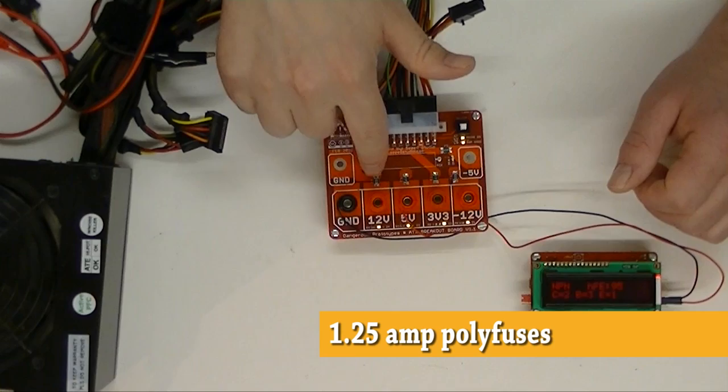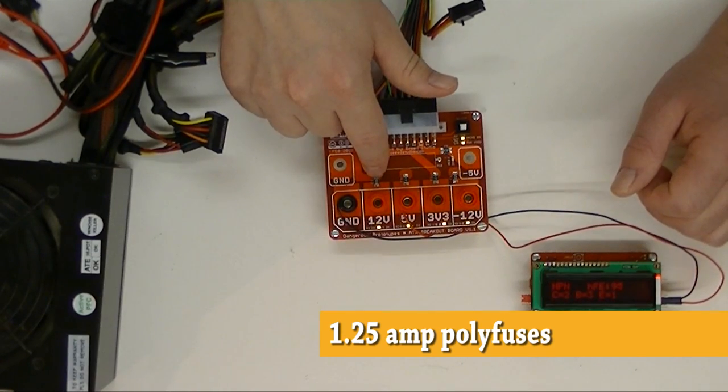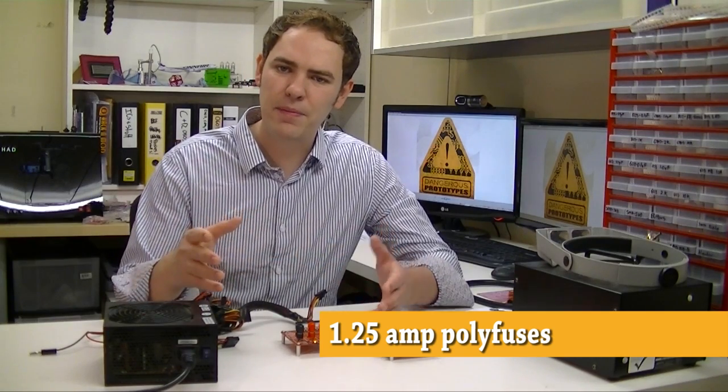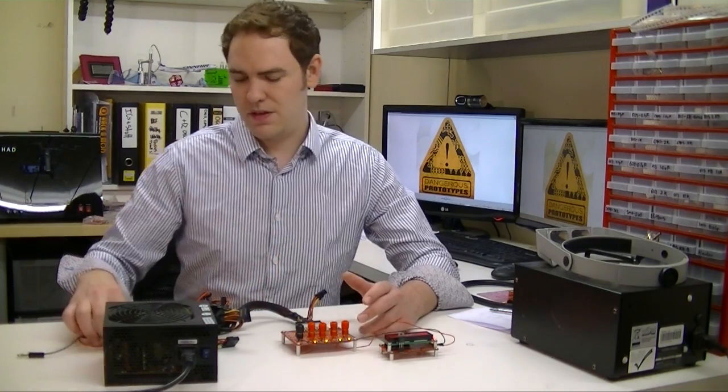So for a modicum of protection we put resettable poly fuses on each power rail. If there's a short the fuse will pop and after you remove the short in a few seconds it'll go back to working normally. So let's try it out.